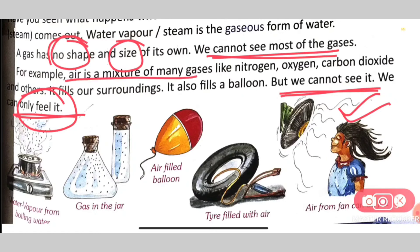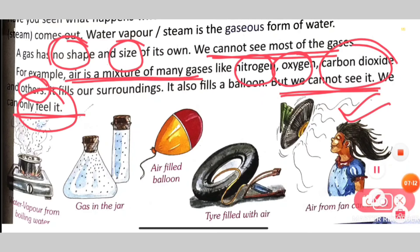Air is a mixture of many gases. Basically, air is not just one type of gas — it is a mixture of nitrogen, oxygen, carbon dioxide, and many other gases. Some amount of water vapor is also present. These gases together make up air.